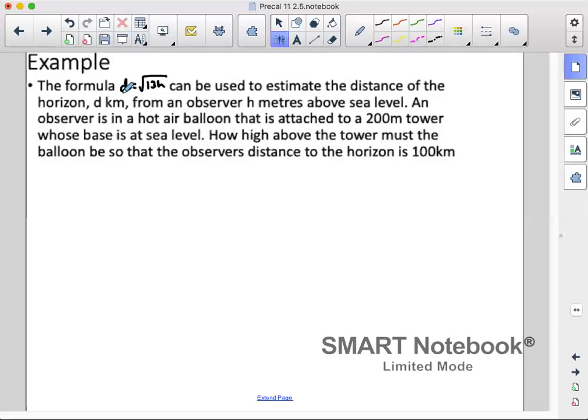So our d is 100. So we have 100 is equal to the square root of 13h. We would square both sides. So that gives us 10,000 is equal to 13h. Divide both sides by 13. That gives us 769 meters is equal to h.